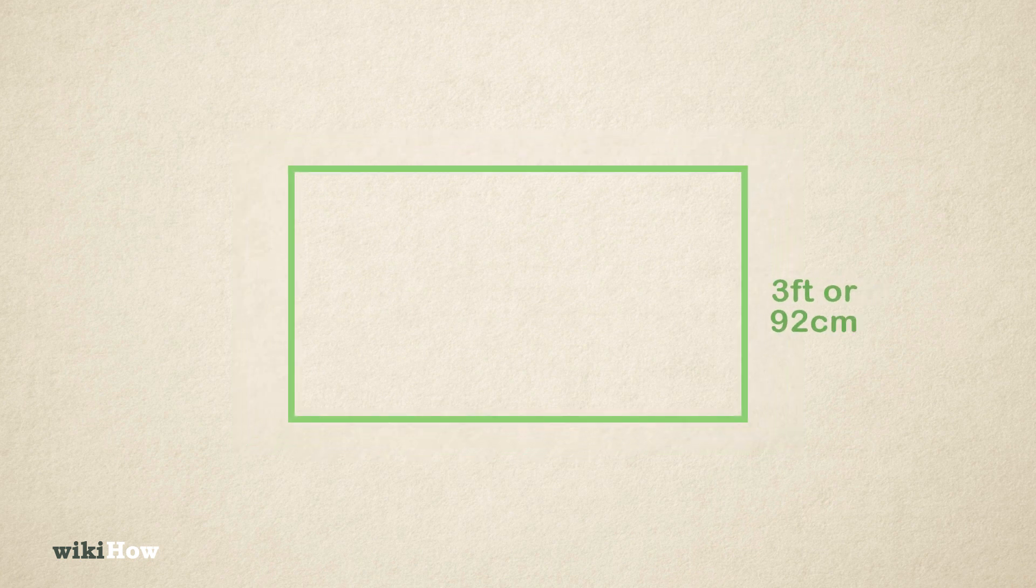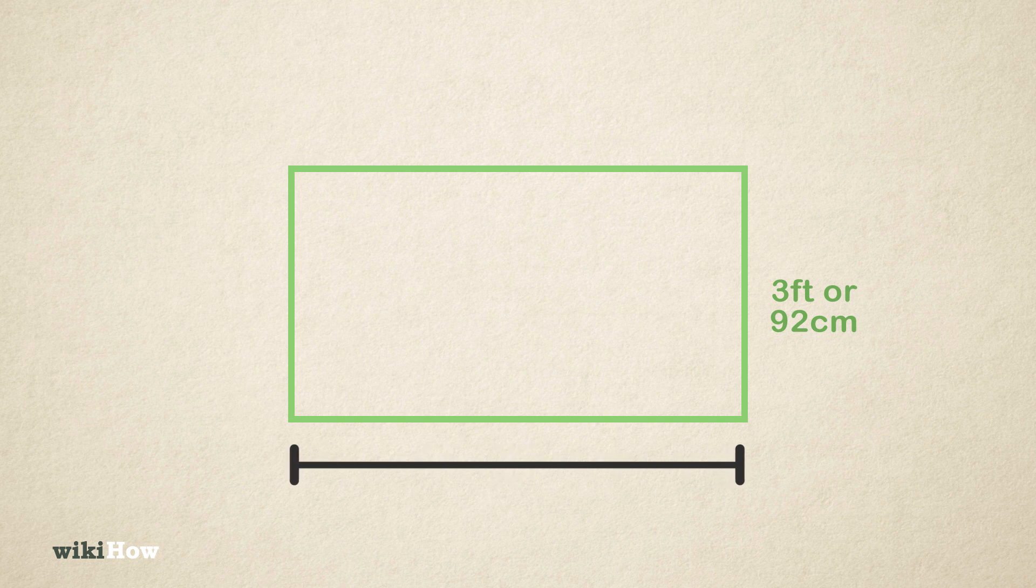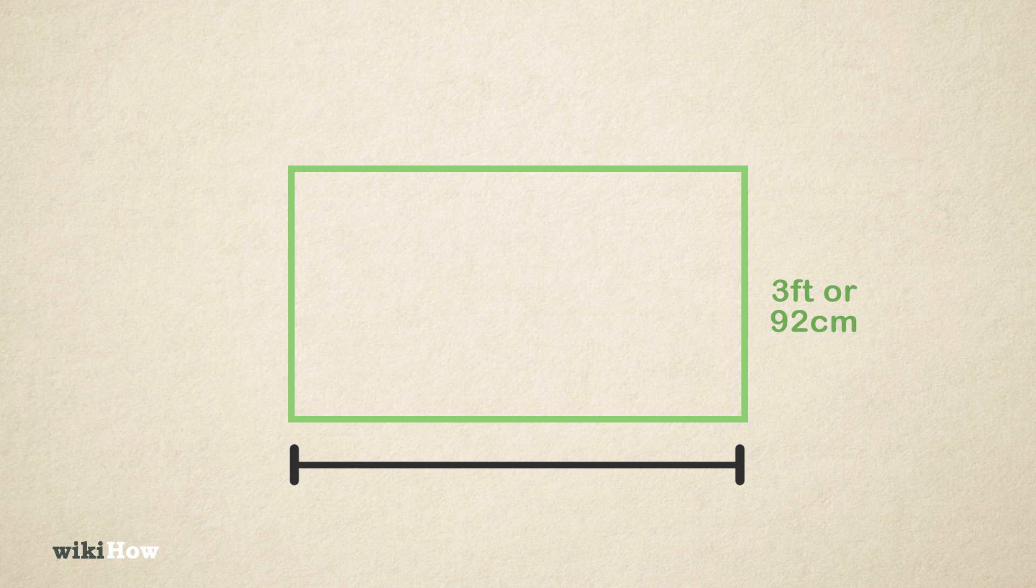Then, find the width of one side of your rectangle. Write down the value for your width next to the horizontal side of your rectangle it represents. In this example, we found the length of the rectangle to be 5 feet or 152 centimeters.